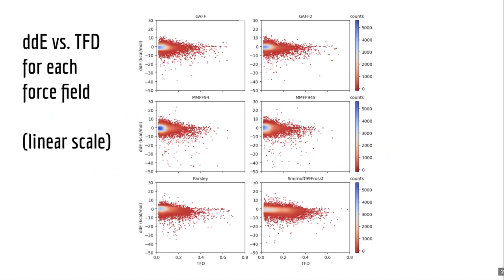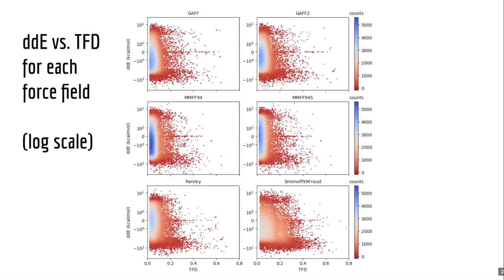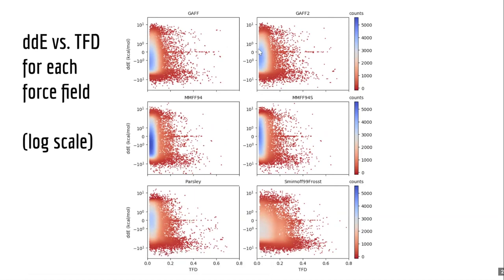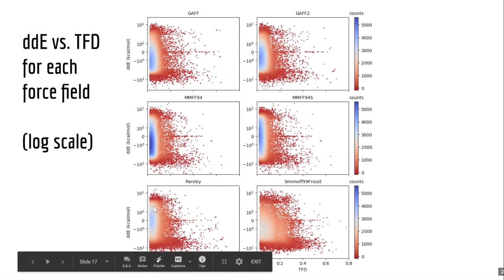Looking at the log scale to better understand the central region: comparing GAFF and GAFF2, we see that the high-density region is strongly negative, reflecting that asymmetry, then it shifts to be slightly more symmetric on the ΔΔE axis. A similar observation is noted for MMFF94, where there's a little more asymmetry which gets somewhat reduced in the MMFF94S force field. Parsley seems to be more symmetric than the others, while with SMIRNOFF99Frosst, things are just much more spread out.